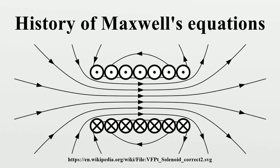The difference between the B and the H vectors can be traced back to Maxwell's 1855 paper entitled On Faraday's Lines of Force, which was read to the Cambridge Philosophical Society. The paper presented a simplified model of Faraday's work and how the two phenomena were related. He reduced all of the current knowledge into a linked set of differential equations. This is later clarified in his concept of a sea of molecular vortices that appears in his 1861 paper On Physical Lines of Force, within which H represented pure vorticity.